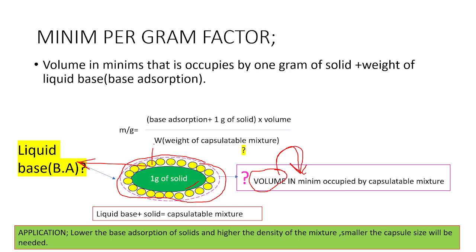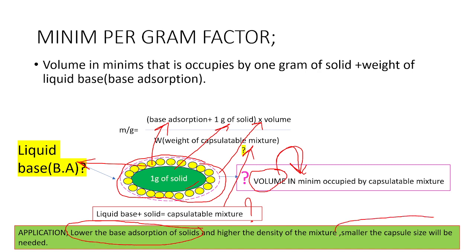Base adsorption is the amount of liquid base required for 1 gram of solid. The minimum per gram factor is the volume divided by the weight of the capsulatable mixture — that is liquid base plus solid. If the base adsorption of the solid is lower, then a smaller capsule size can be recommended. Both the minimum per gram factor and base adsorption are responsible for the selection of capsule sizes.